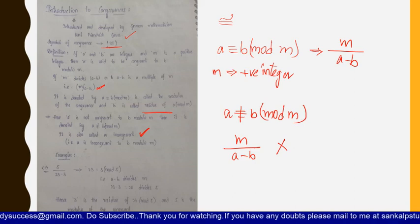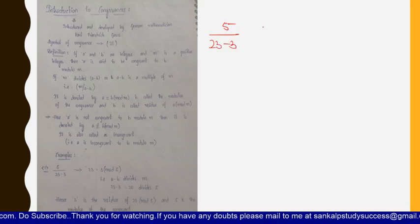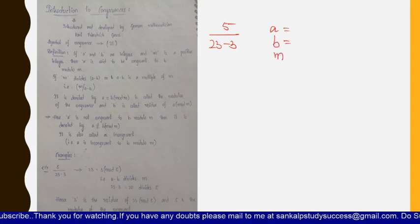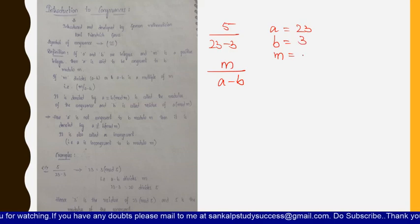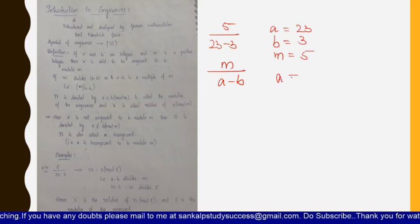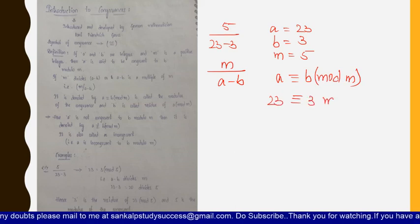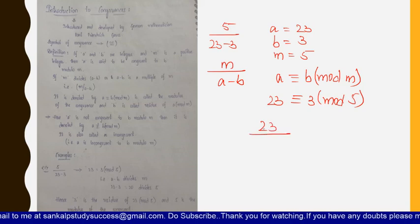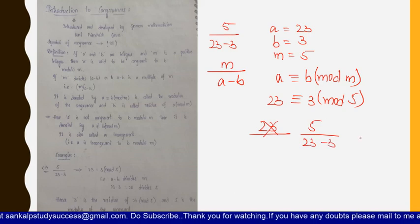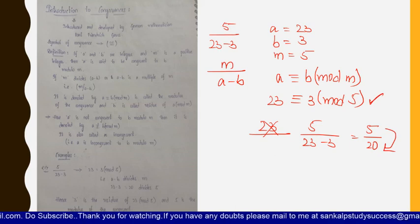Let us take a few examples to understand this more clearly. First example: 5 divides (23 minus 3). From here we identify a = 23, b = 3, and m = 5. So according to the formula, 23 is congruent to 3 modulo 5. To verify: 5 divides (23 minus 3), which is 5 divides 20 — true. So m divides a minus b, confirming 23 ≡ 3 (mod 5), and 5 is the modulus of the congruence.